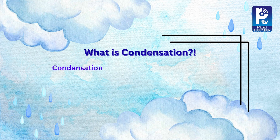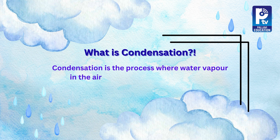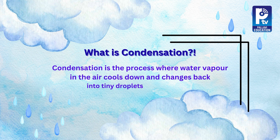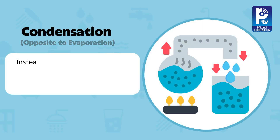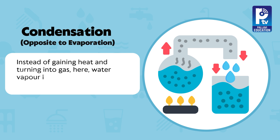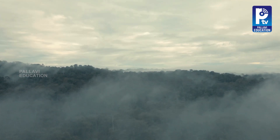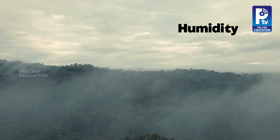Let's take a closer look at condensation. Condensation is the process where water vapor in the air cools down and changes back into tiny droplets of liquid water. It's the opposite of evaporation. Instead of gaining heat and turning into gas, water vapor loses heat and becomes liquid. But there's something else that plays an important role, and that is humidity.